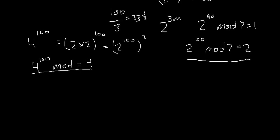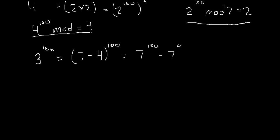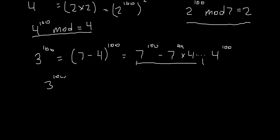Now for 3 to the power of 100 and 5 to the power of 100, it's going to be a little harder. My advice — and this is what I did — 3 to the power of 100 can be rewritten as 7 minus 4, to the power of 100. If you expand this out using the binomial theorem, you get 7 to the 100 minus 7 to the 99 times 4, and so on, with the last term being 4 to the power of 100. All terms except the last contain 7, so they're all divisible by 7. Therefore, 3 to the power of 100 mod 7 equals 4 to the power of 100 mod 7.